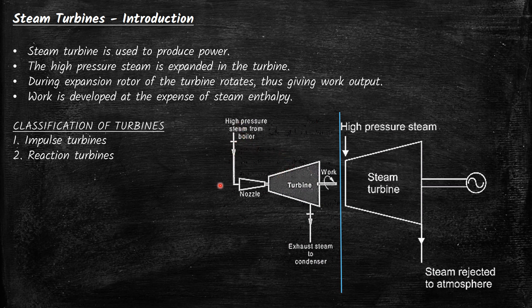In an impulse turbine, as the steam enters the turbine through the nozzle, it will be at a very high velocity. The complete expansion of steam happens inside the nozzle and it will have very high kinetic energy, and that kinetic energy will be converted to work when it impinges on the turbine blades.